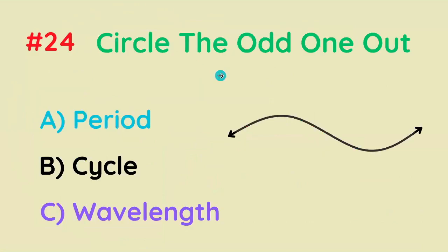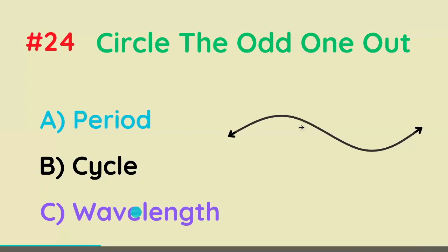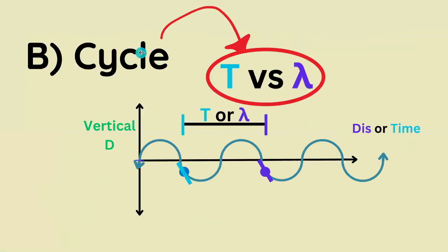Circle the odd term out: period, cycle, wavelength. The correct answer is cycle, because it's the broad term to describe a wave repeating itself. For wavelength, it's in dimensions of distance. For period, it's in dimensions of time.